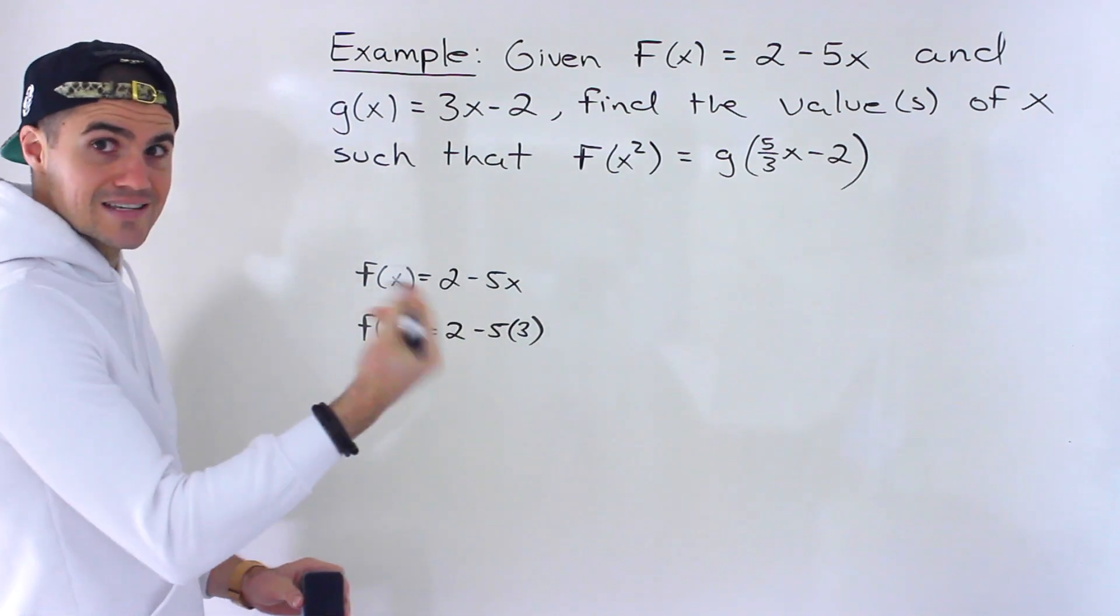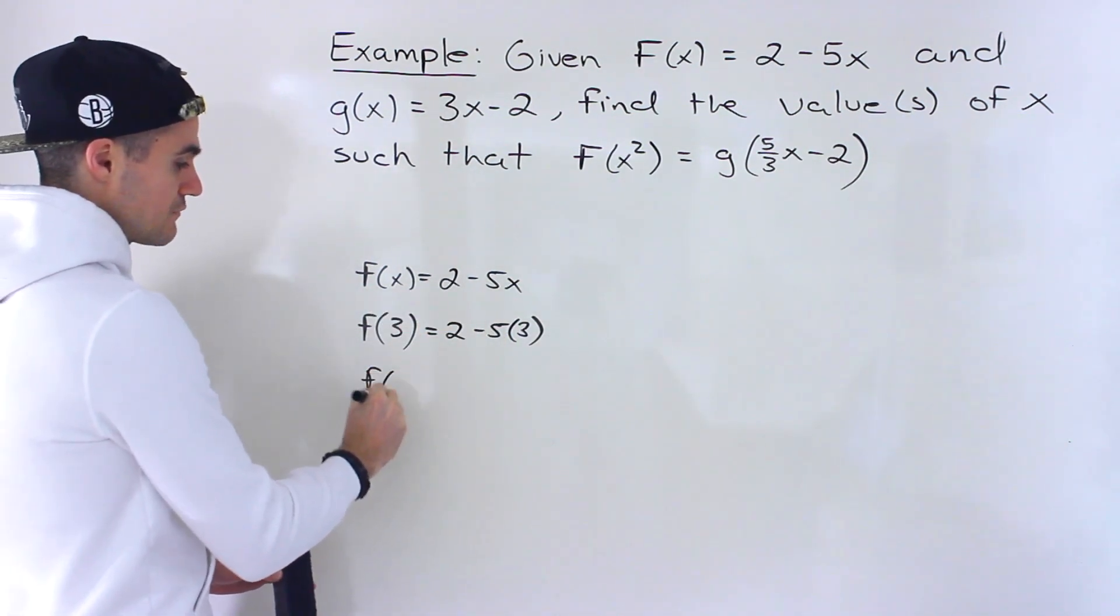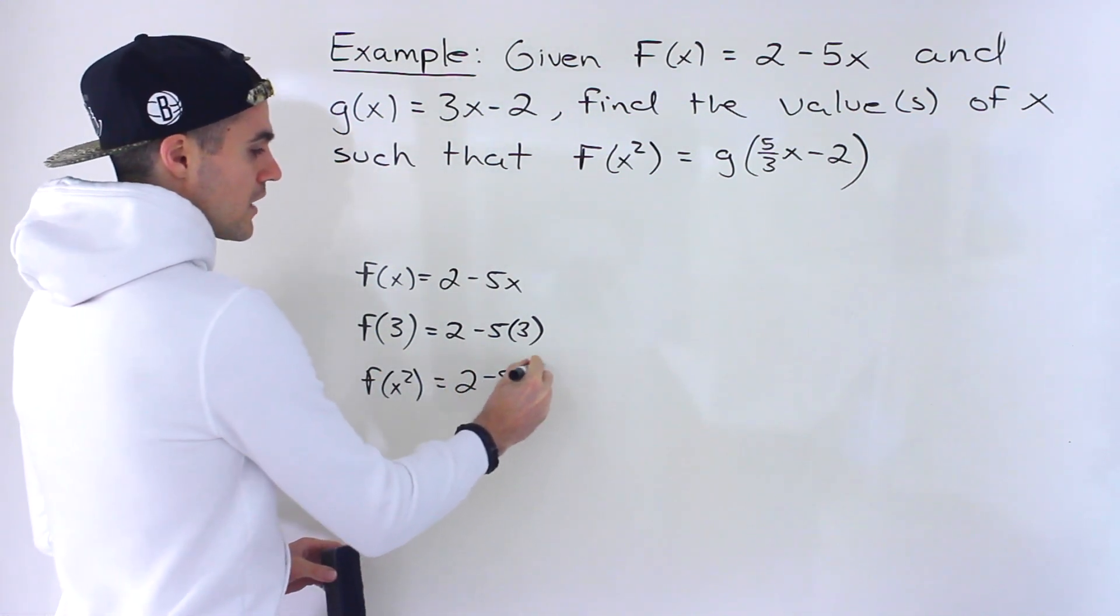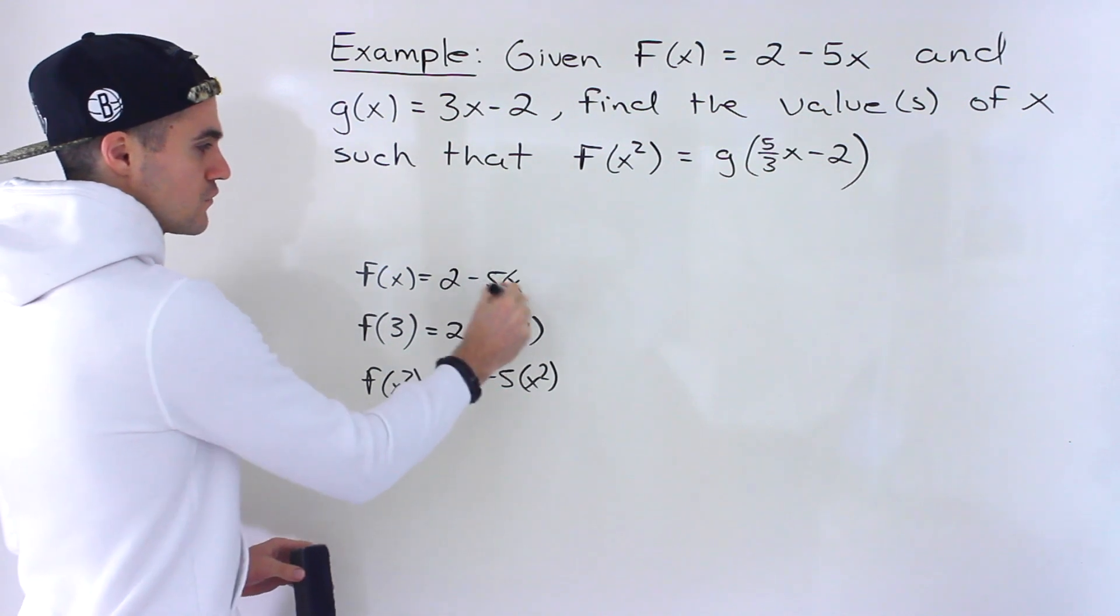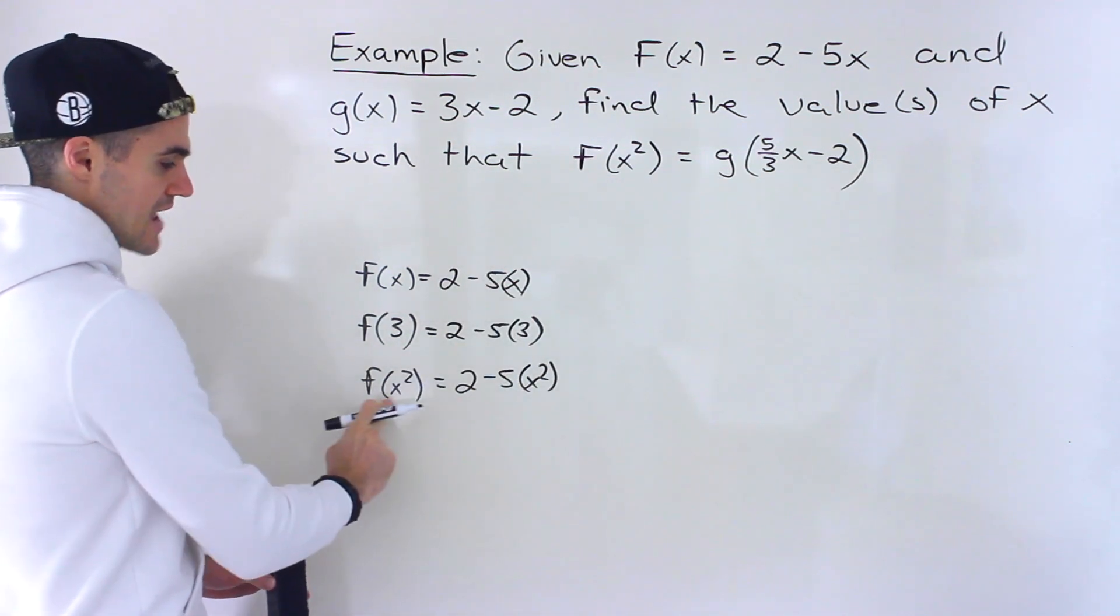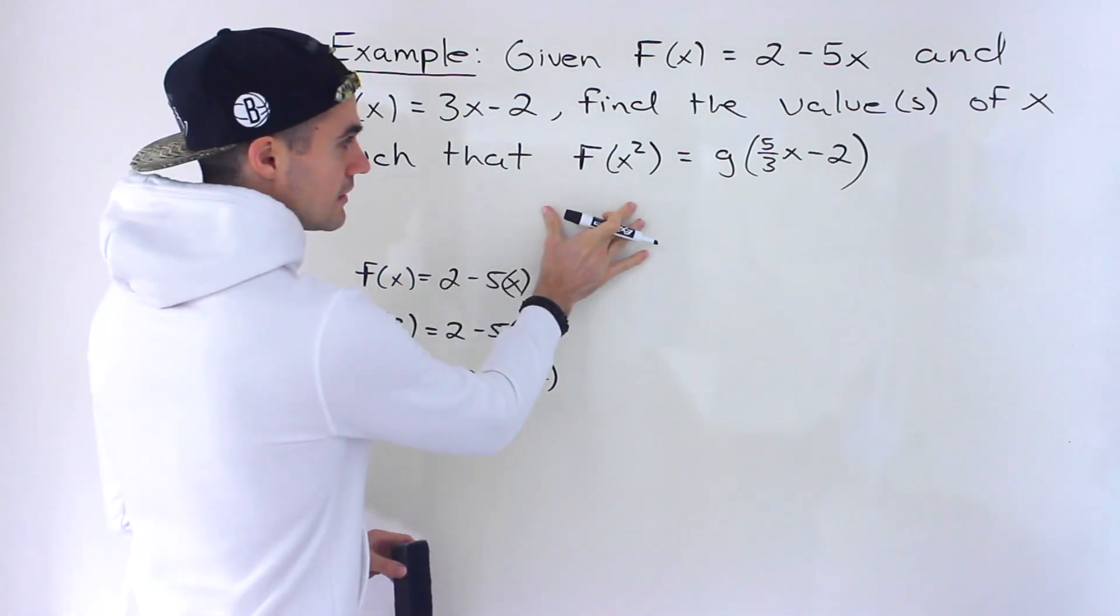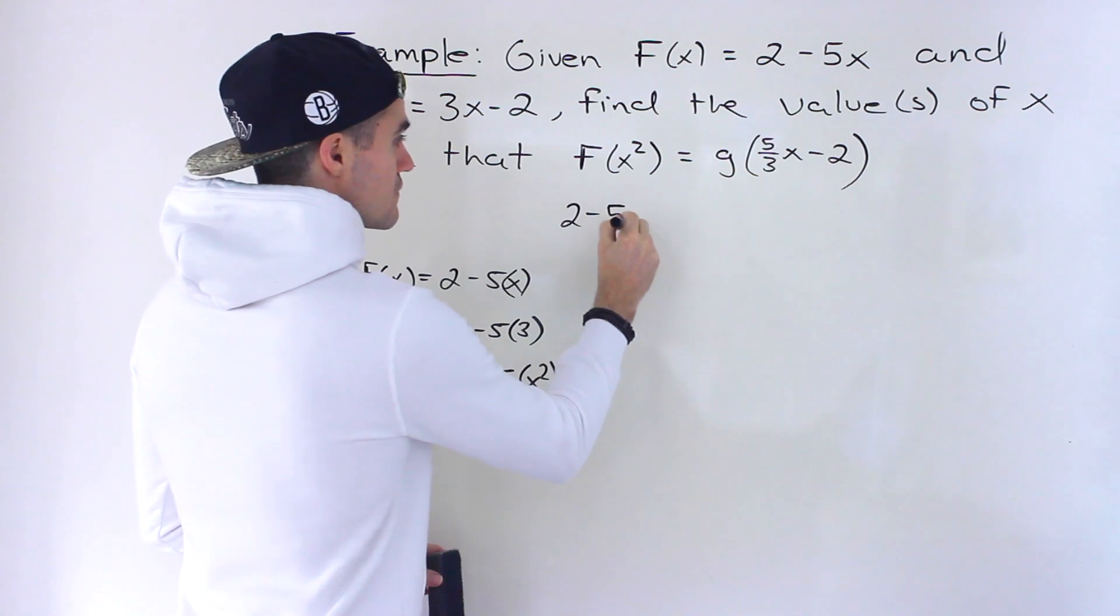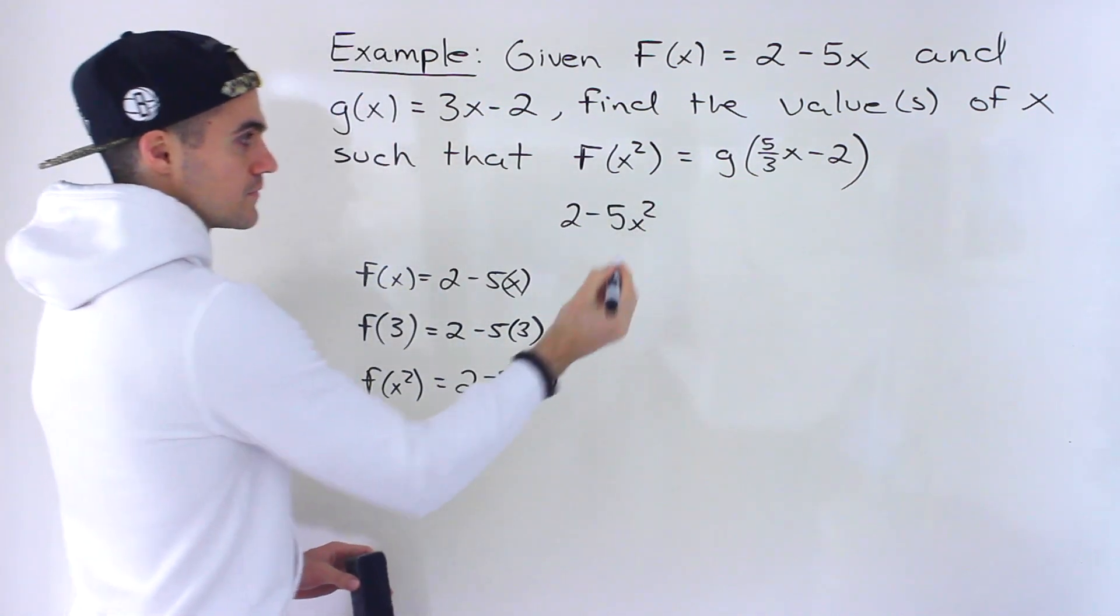So following that same process, notice what's f of x squared going to be? Well, we would just plug in x squared for the x value for this bracket over here. So this is f of x squared—that's going to be the left side of this equation. So I'm just going to write here 2 minus 5x squared like that.